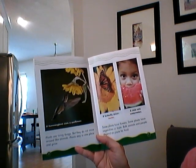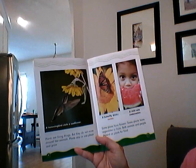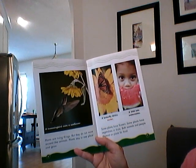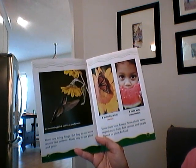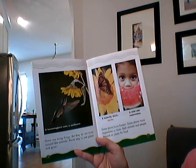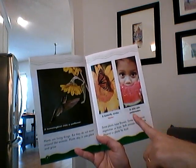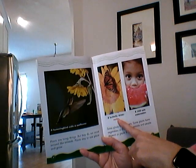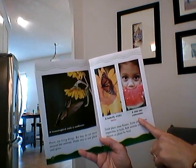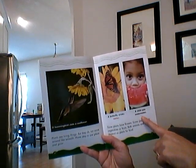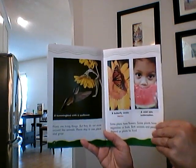Some plants have flowers. Some plants have vegetables or fruits. Both animals and people depend on plants for food. A butterfly drinks nectar. A child eats watermelon.